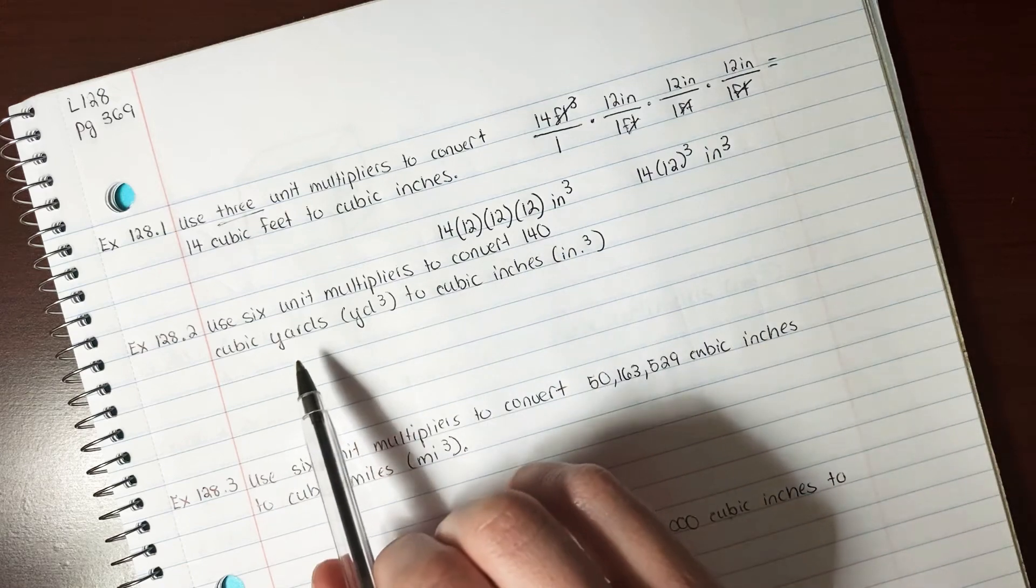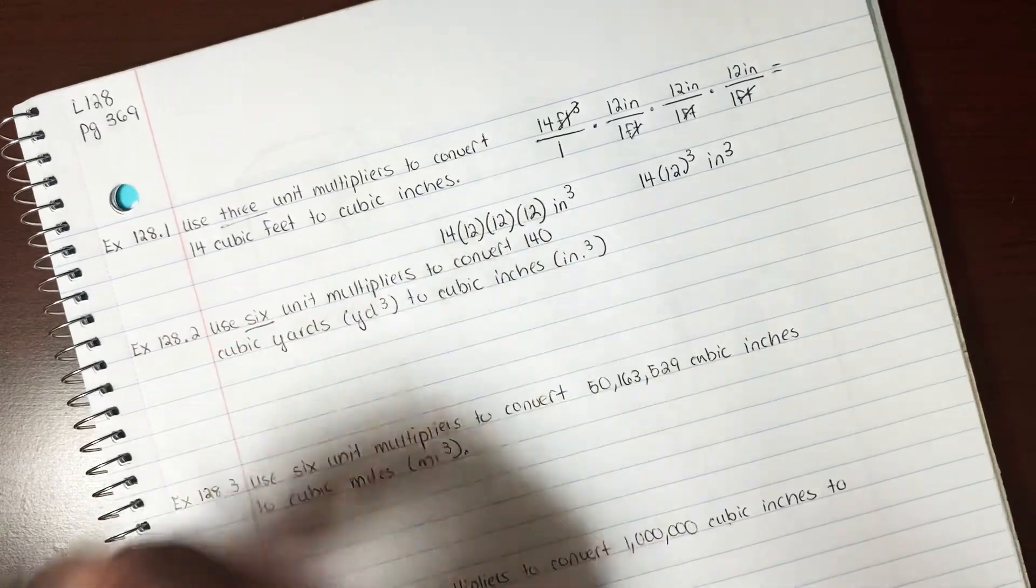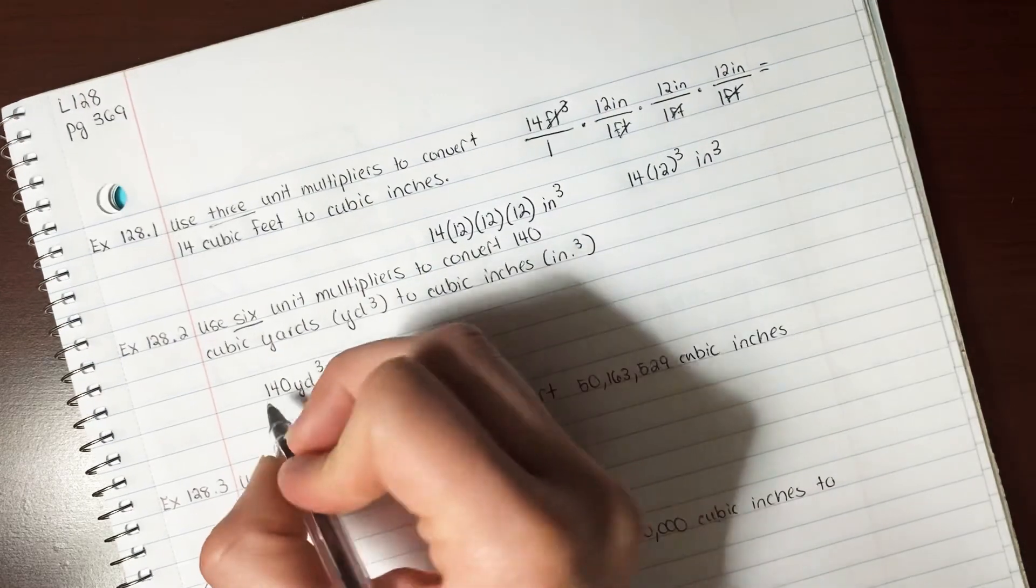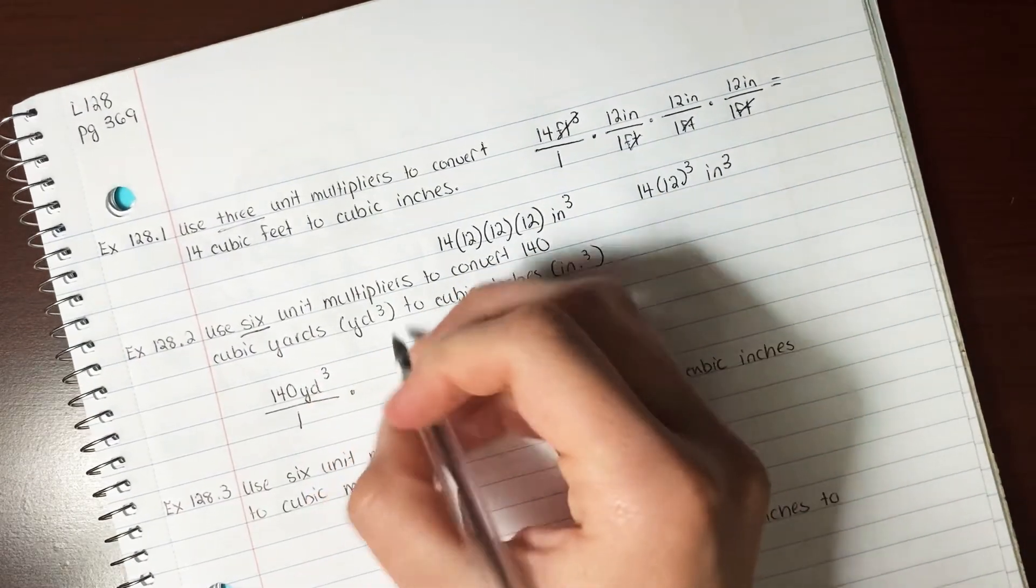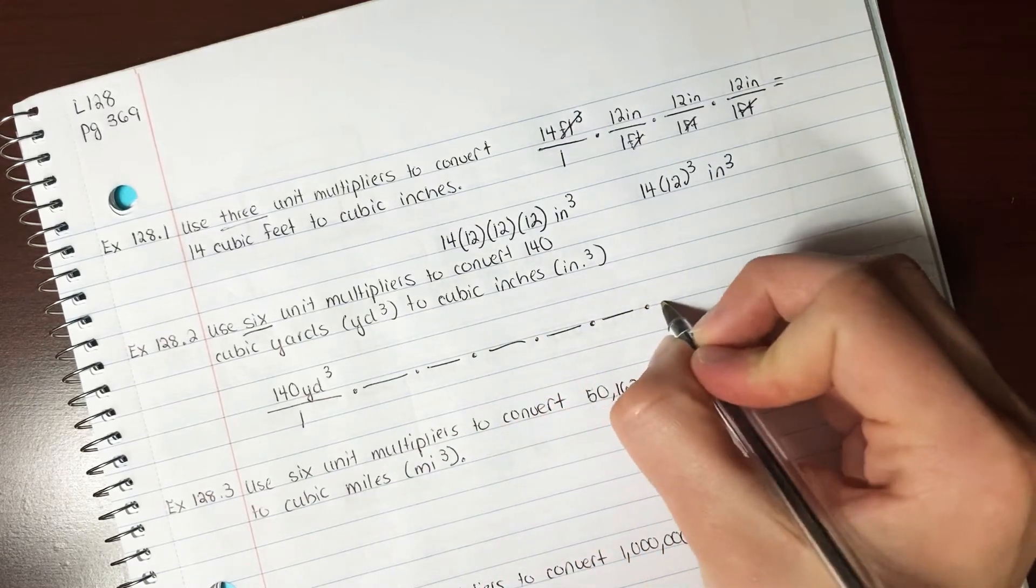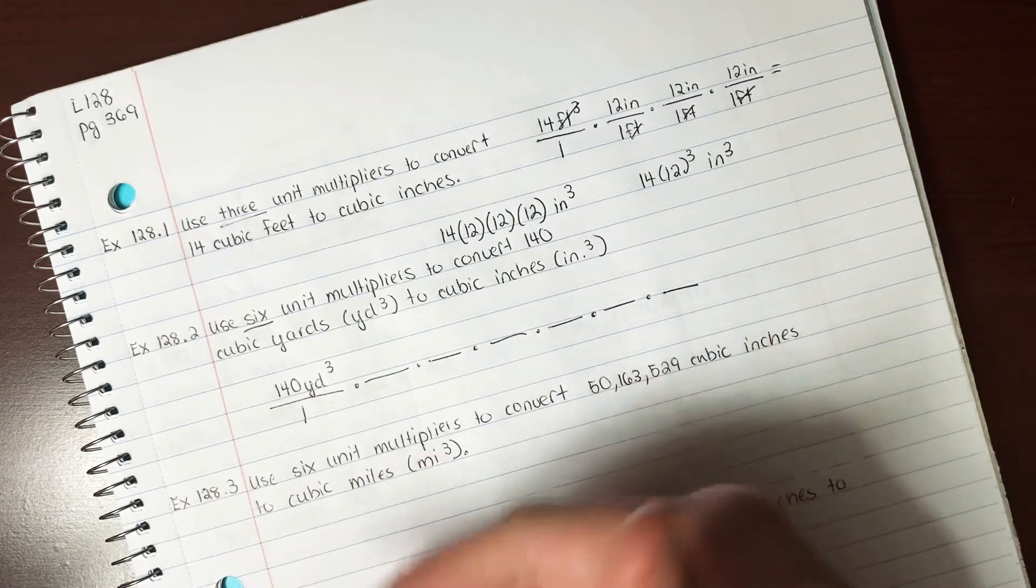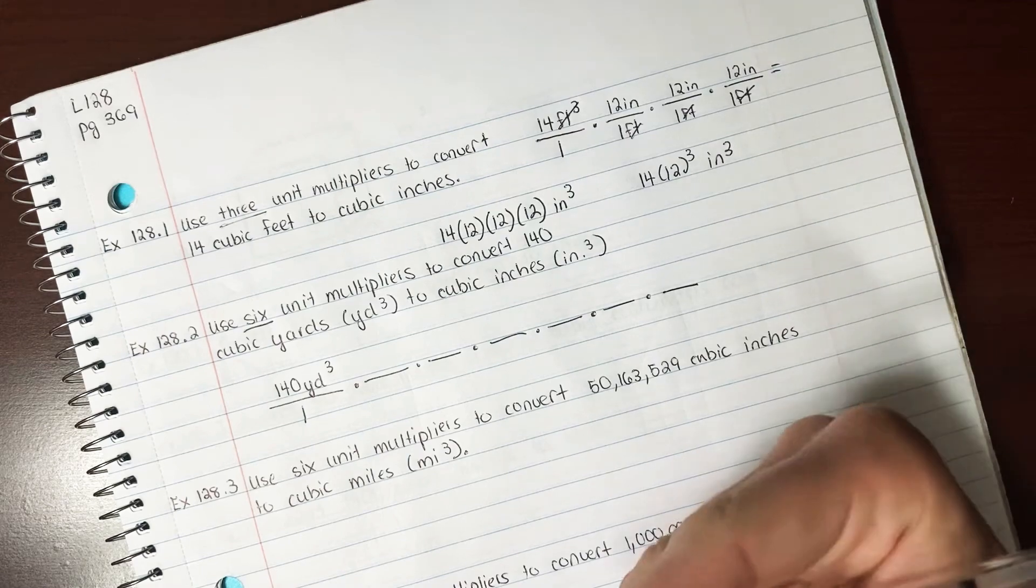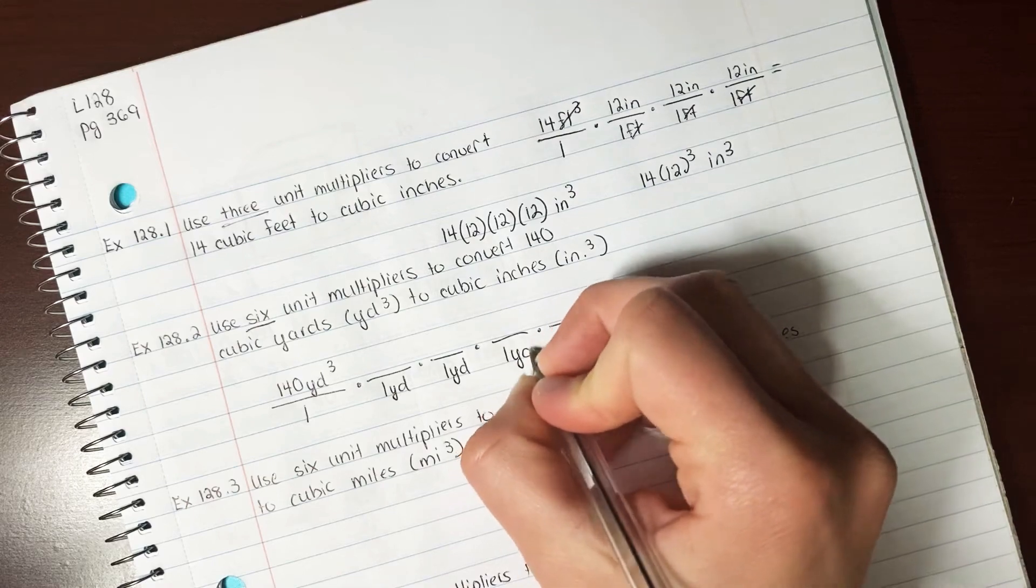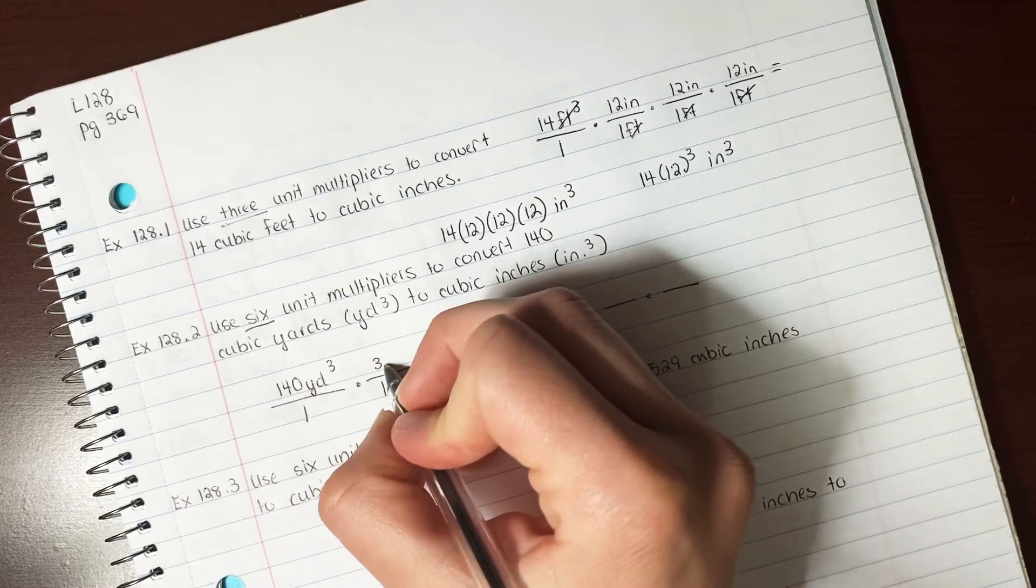Use six unit multipliers to convert 140 cubic yards to cubic inches. So we're going to use six. We start with our 140 yards cubed over one, and then we're going to use one, two, three, four, five, six. So we're going from yards to inches, and if we're using six, we're going to go from yards to feet to inches. So we're going to need three yards on the bottom to cancel this out. How many feet are in a yard? Hopefully you remember three feet.